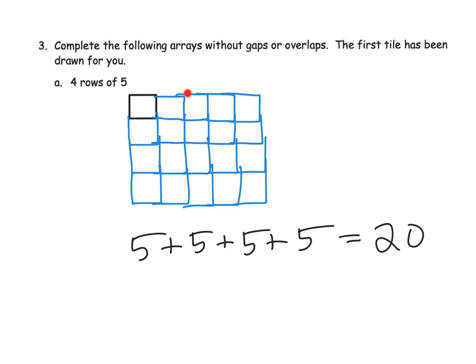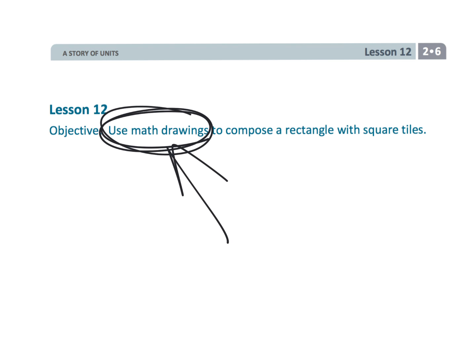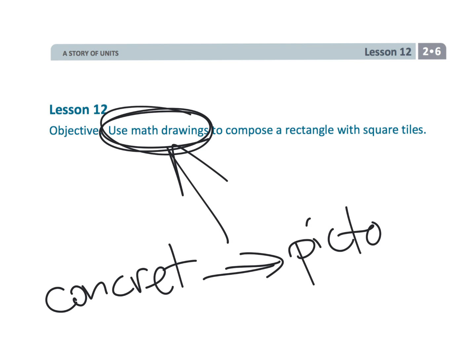But don't forget that students looking at the columns could say it's four plus four plus four plus four plus four, which also equals twenty. Students have a choice. That wraps up a really nice, simple lesson where we're focusing on the drawings as we move from the concrete to the pictorial representation. This was lesson 12 of second grade module 6.